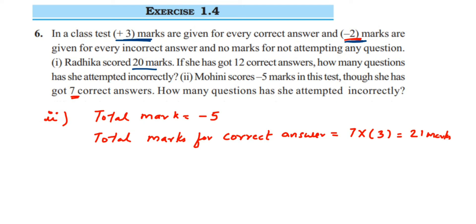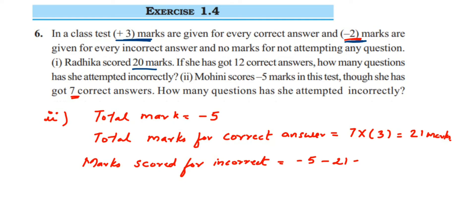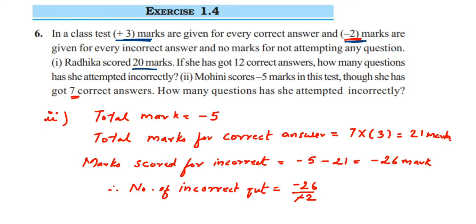Total marks for the incorrect answer: from total marks we subtract the marks obtained for correct answers. Total she got is minus 5, from this we subtract 21, so minus 5 minus 21 equals minus 26. Now, number of incorrect questions: minus 26 divided by minus 2 — minus and minus cancel, 26 divided by 2 gives 13. So she has attempted 13 incorrect questions.